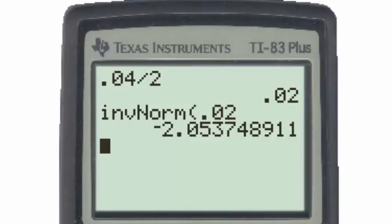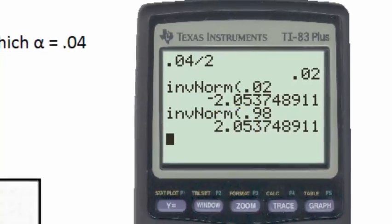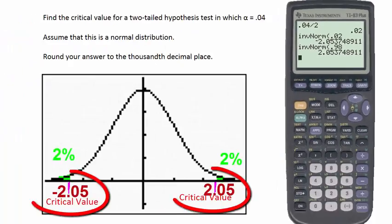And we see that the z-score or critical value for 2% is negative 2.05. If we were to find the same inverse normal for 98%, we get a positive 2.05. And since the alpha of 4% is shared equally in the two tails, the two critical values have the same absolute value, and we have one answer that is positive and another answer that is negative.